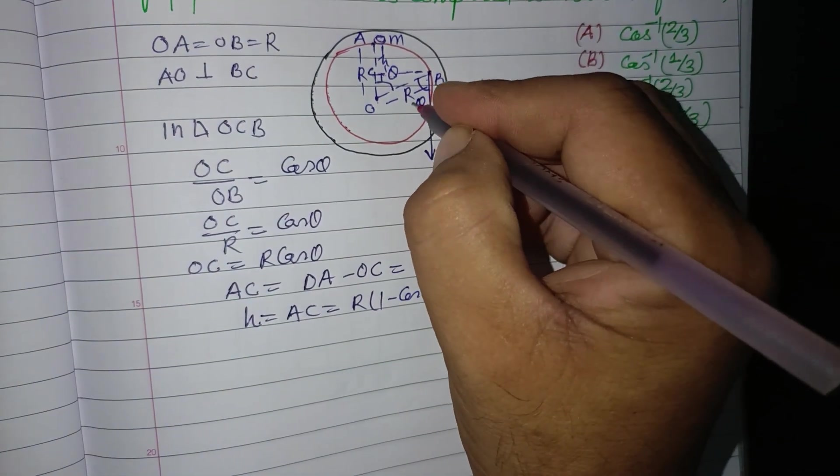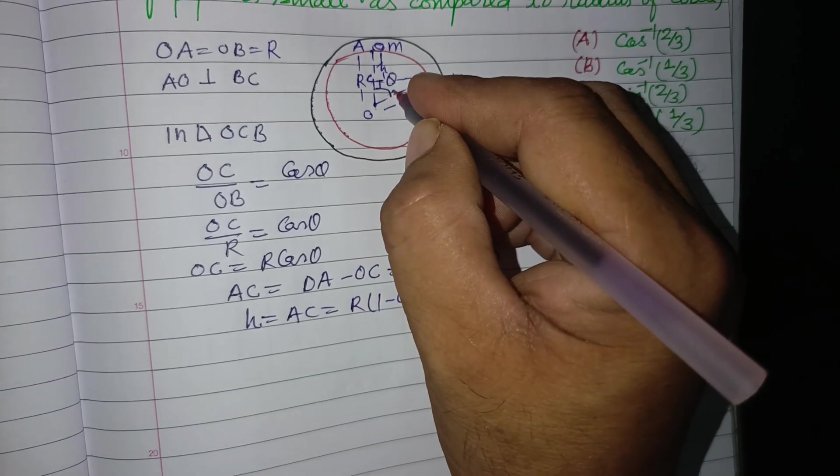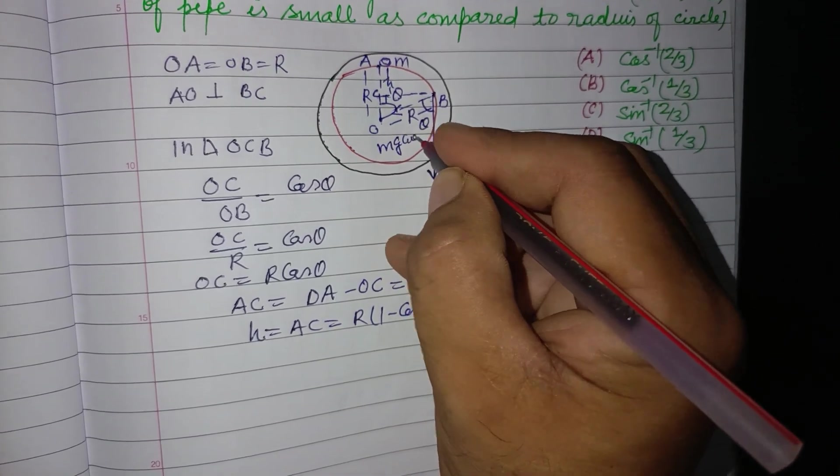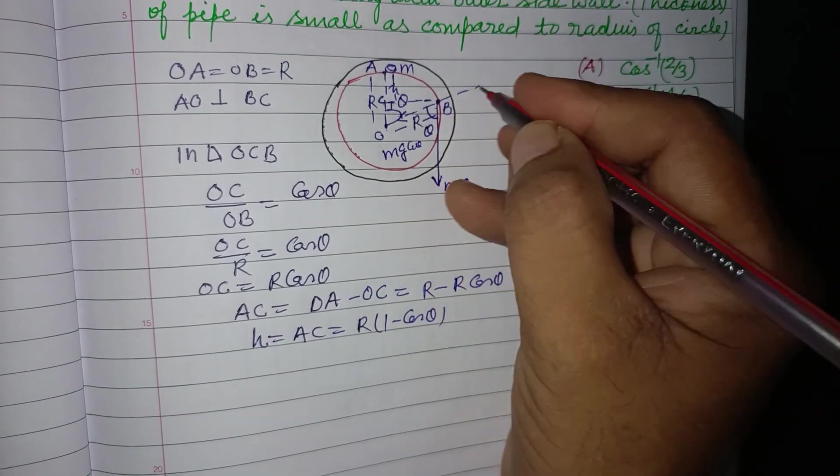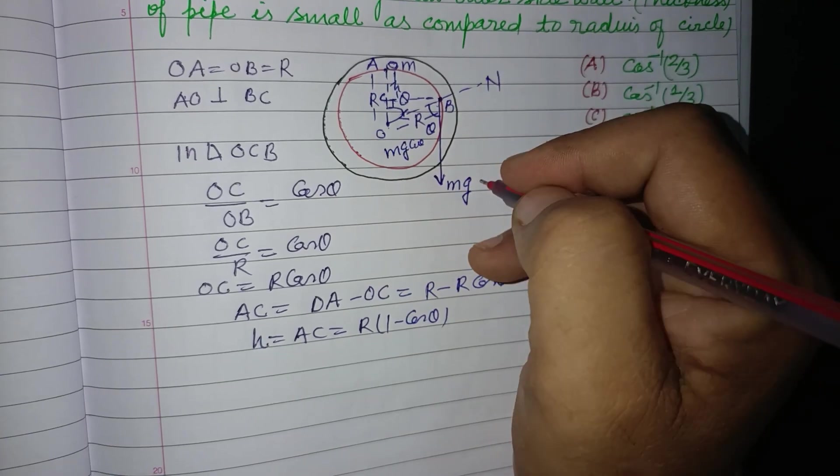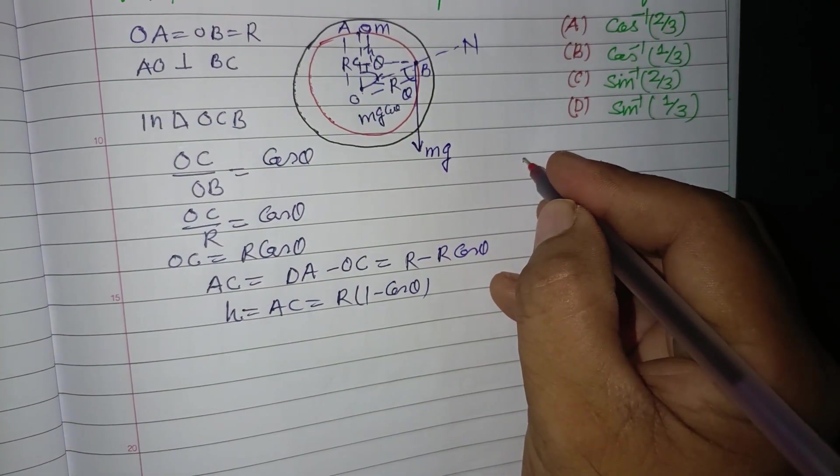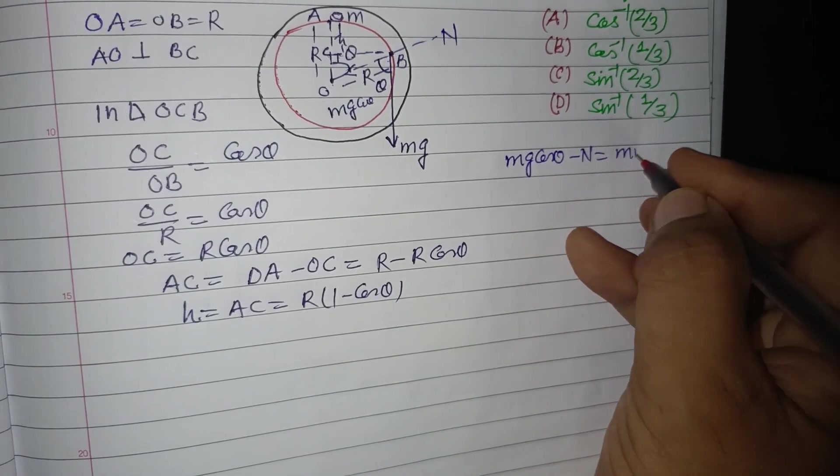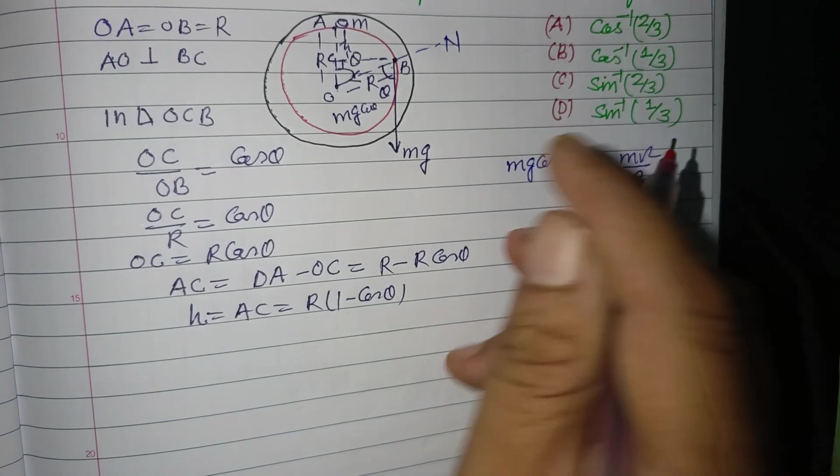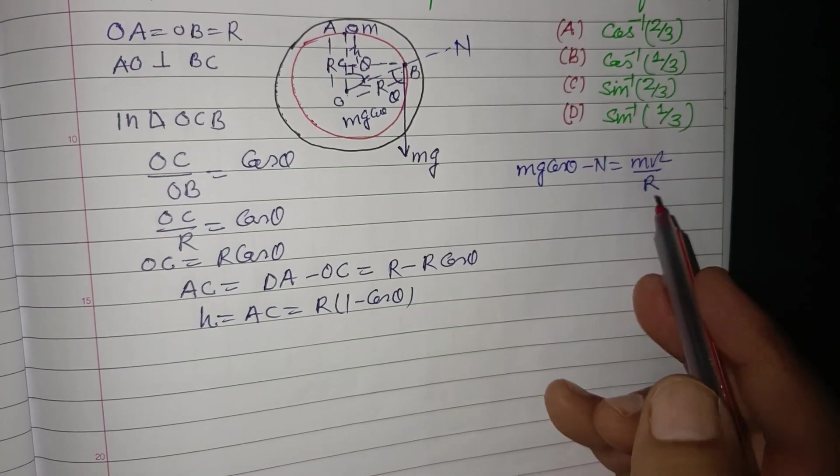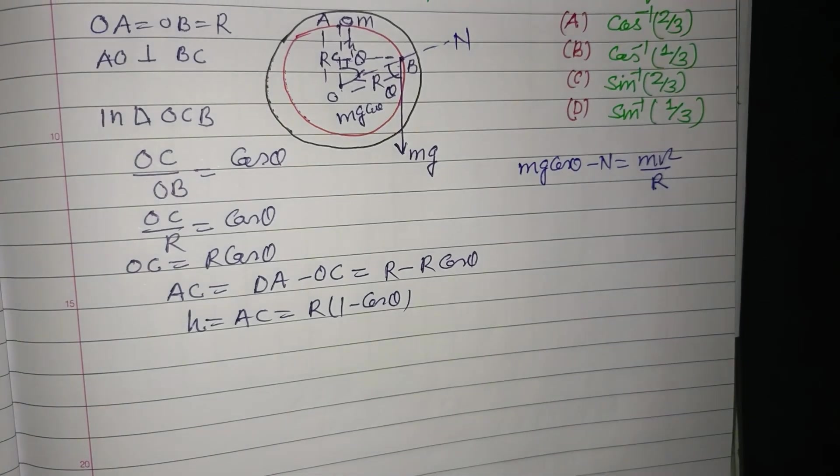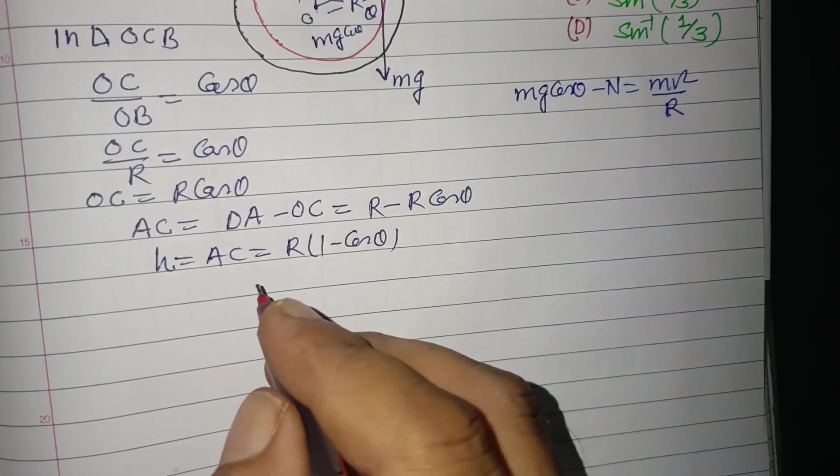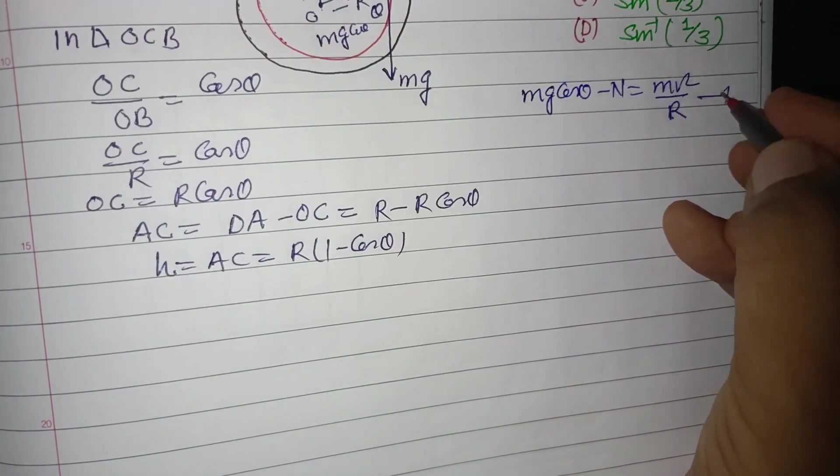We take its component toward the center, which is mg cos theta. And normal reaction of this inner circle is N. So mg cos theta minus N equals m v squared upon R, because the particle is moving on a circular track of radius R. This is our first equation.